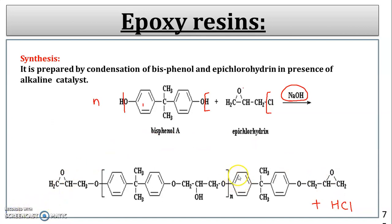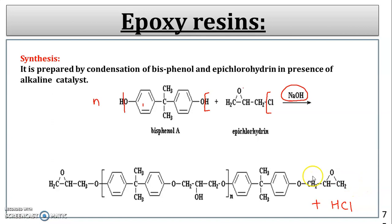In Bakelite, water is removed as a byproduct, whereas in epoxy resin, HCl is removed as a byproduct. A long chain with the repeating unit -CH₂-CHOH-CH₂-O- is formed. Since two different monomers are present, epoxy resin is a copolymer. It also has a cross-link structure and is formed by condensation polymerization.